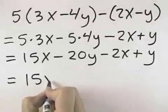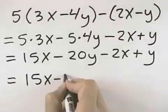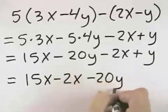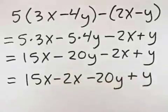So I will leave the 15x first, but now we have a negative 2x to subtract from that. Then we have negative 20y and a positive y to combine with that, so that we can regroup our values.